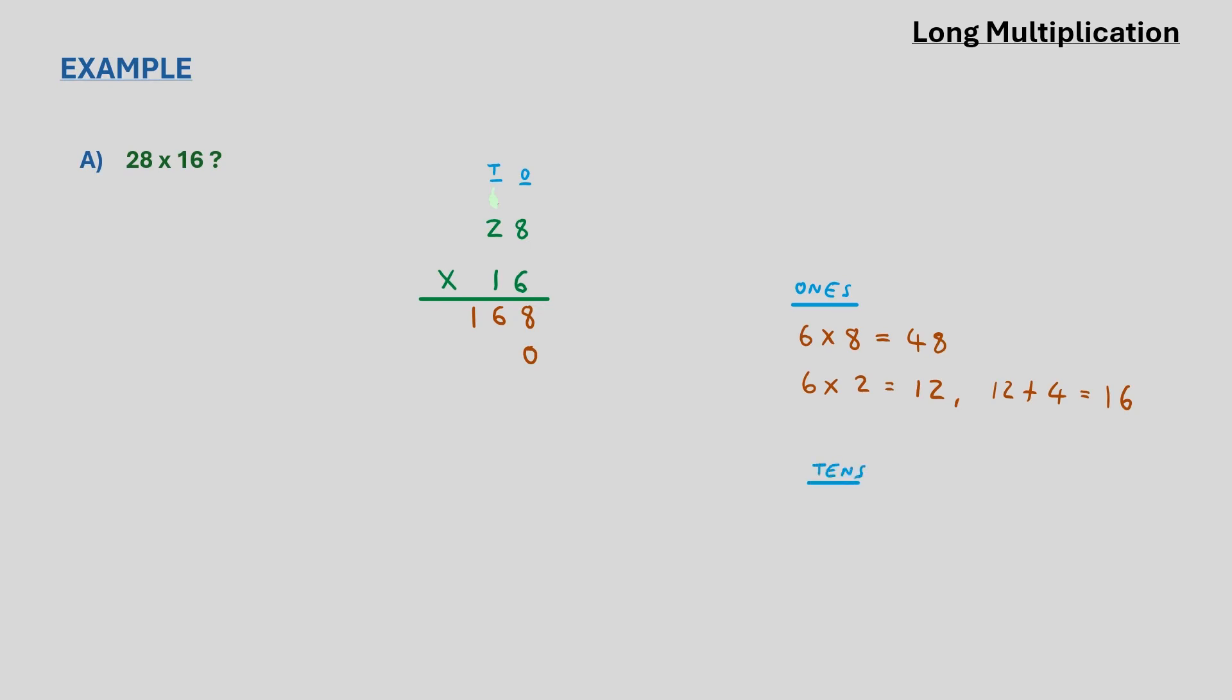So proceeding with the next multiplication, 1 times 8 is 8, and 1 times 2 is 2. And now that we have our multiplication results from multiplying the two lower digits by the top two digits, the next step is to add them both together and the result will be the answer to the original multiplication sum. So here we see that 28 multiplied by 16 is 448.